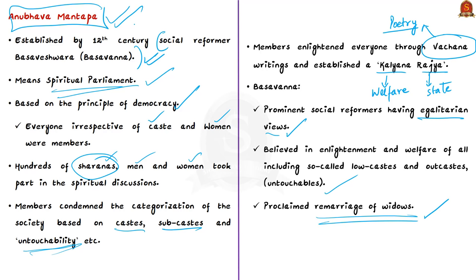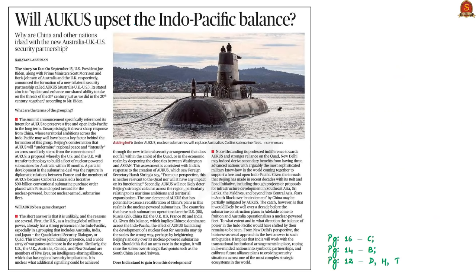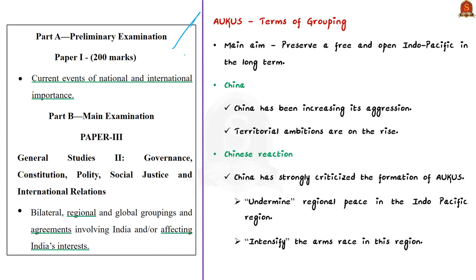With these important terminologies, we are moving to the news articles discussion session. Our first discussion is based on AUKUS, which is making a lot of headlines nowadays, just as Quad did last year. AUKUS is a new trilateral security partnership recently announced by USA, Australia, and UK — AU stands for Australia, UK for United Kingdom, and US for United States. It is a trilateral security partnership. The main aim of AUKUS is to preserve a free and open Indo-Pacific in the long term, amid rising Chinese aggression in the South China Sea and growing territorial ambitions across the Indo-Pacific.